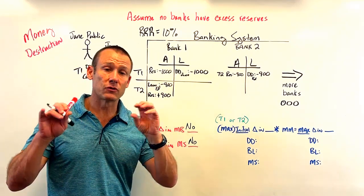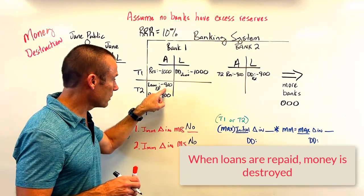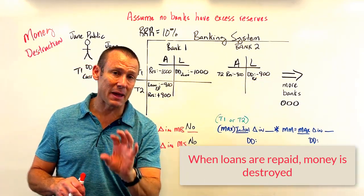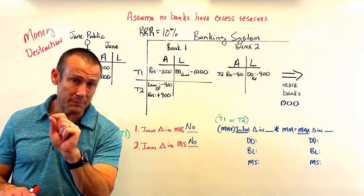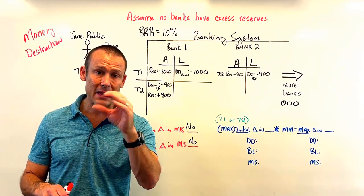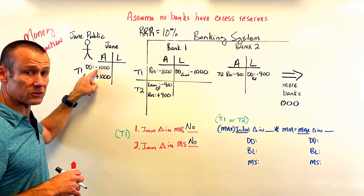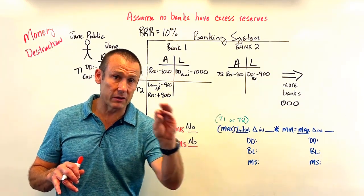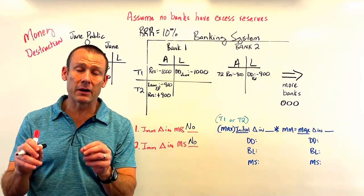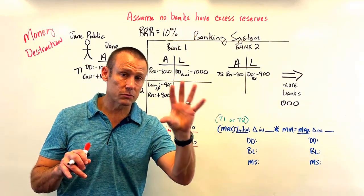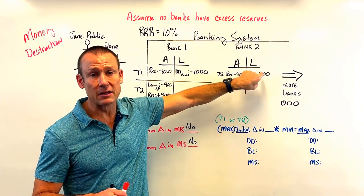What happened in T2 is critical: money was destroyed. On Ed's balance sheet — liability: loan minus $900; asset: demand deposit minus $900. Unlike the withdrawal where demand deposits went down but currency went up, here Ed's loan went down and his demand deposits went down. His ability to buy goods and services dropped by $900. That's money destruction. When loans are repaid, money is destroyed; when loans are made, money is created.